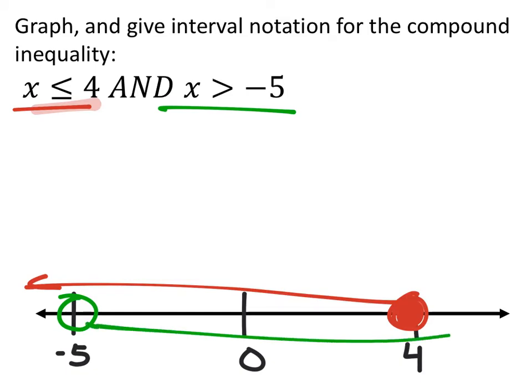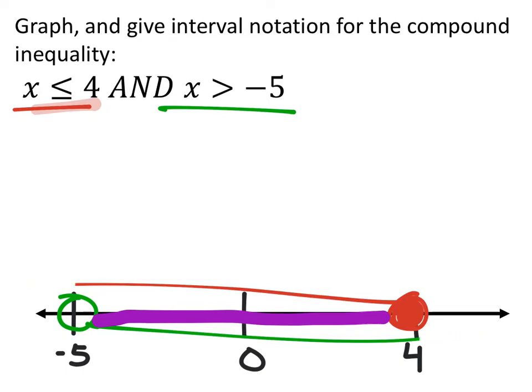I'll put it underneath just so we can see the difference. The question we should ask ourselves is: where does the graph show answers that are part of both the red and the green? It's only where the two lines overlap — which is everywhere between negative five and four. Even though the green line goes infinitely to the right, it stops at four because of the 'and' statement.